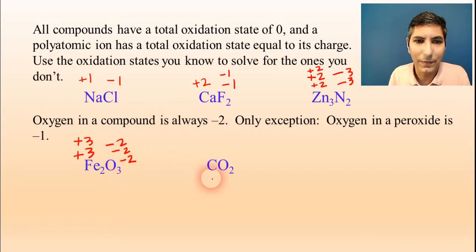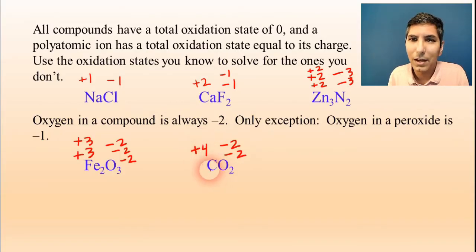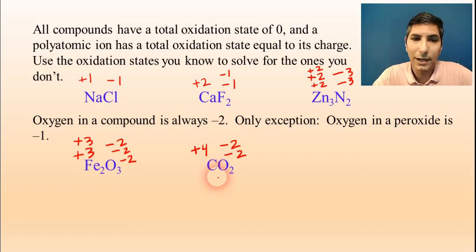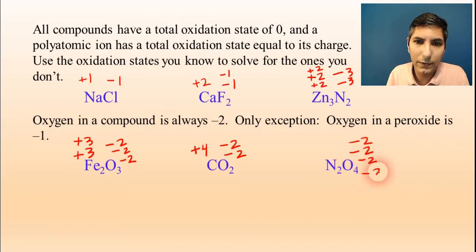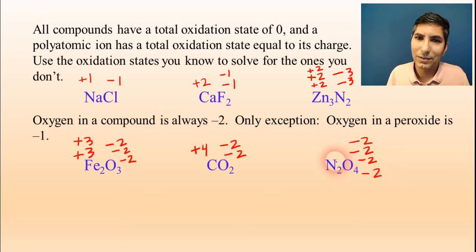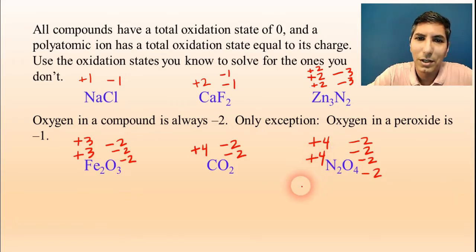In carbon dioxide, oxygen is negative two and we have two of those, giving a total of negative four. That means the carbon has to be positive four to balance it out. In dinitrogen tetroxide, oxygen is negative two and we have four of those — a total of negative eight. That means the two nitrogens have to have a total of positive eight, so dividing by two gives each nitrogen a charge of positive four. Use what you know to solve for what you don't know.